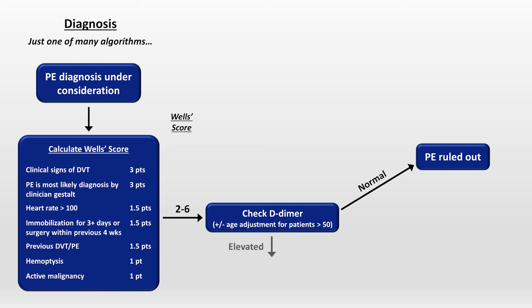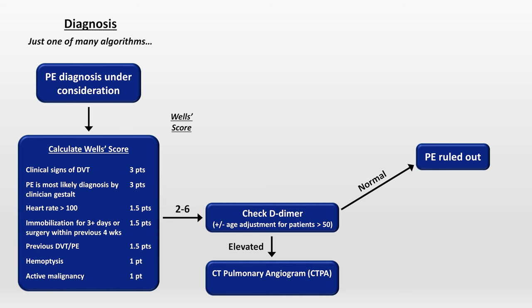If the D-dimer is elevated, the next step is a CT pulmonary angiogram, or either a VQ scan or bilateral lower extremity duplex ultrasound if significant renal disease or prior anaphylactic reaction to contrast precludes CT contrast administration. Pregnancy would be another consideration here.